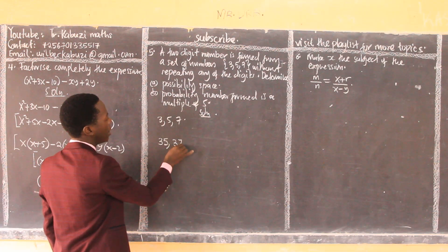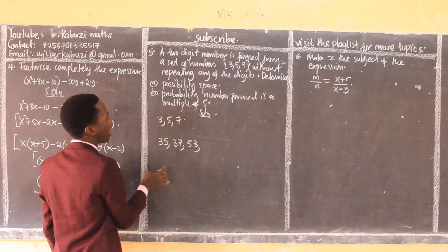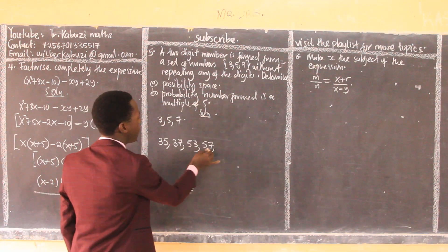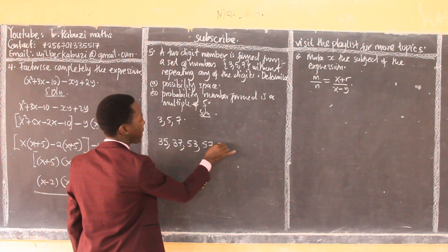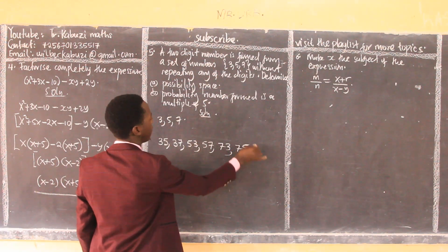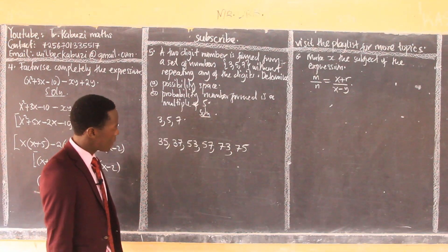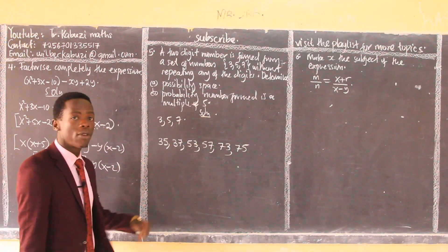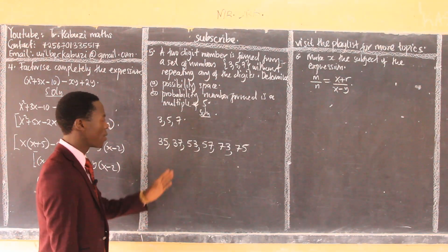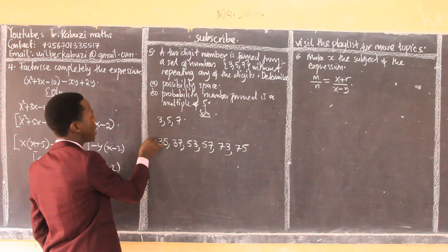...37. I can form 53, I can form 57, then I can form 73, and then I can form 75. So those are the two-digit numbers we can form. We can't form anything else because we are not repeating anything. We can't form 33 because that is repetition of the digit.